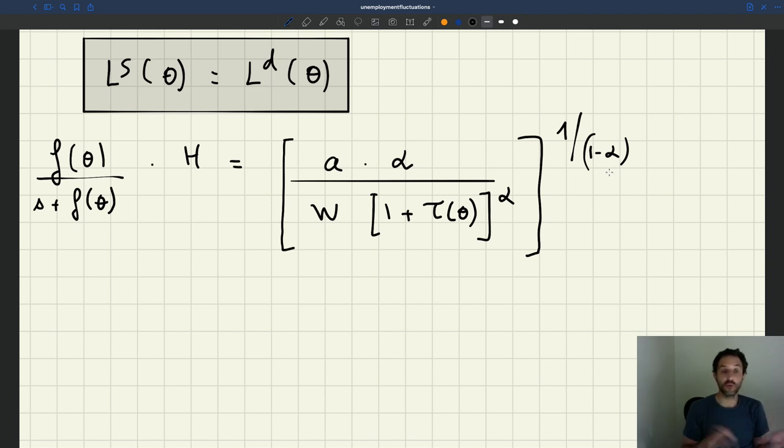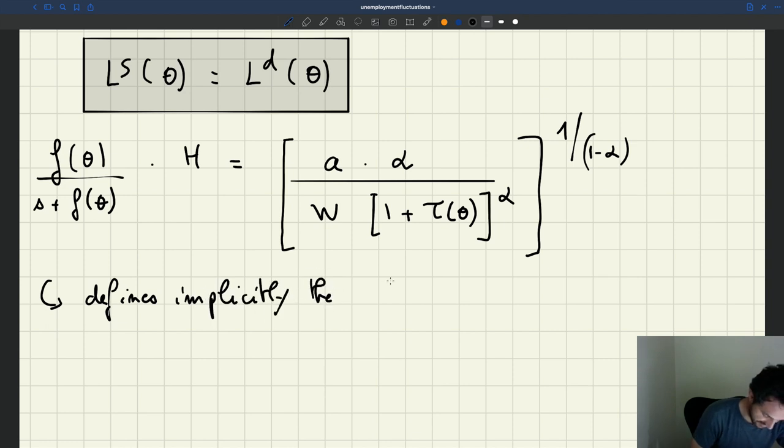And so this equation, we have one equation, we have one unknown, that this equilibrium condition is going to give us, once we solve for it, it's going to give us the labor market tightness. And here, it's going to define implicitly the labor market tightness. This equation defines implicitly the tightness theta. So here I'm saying implicitly because the equation doesn't say theta is equal to something. It's just saying theta has to satisfy this relationship. And that's why it's an implicit definition.